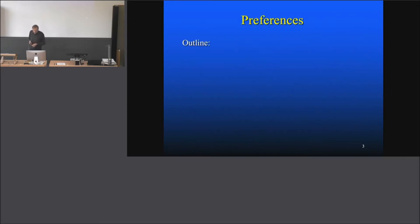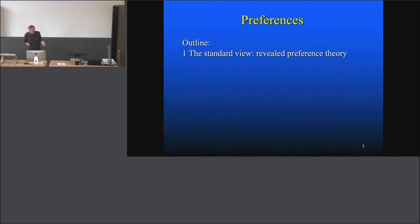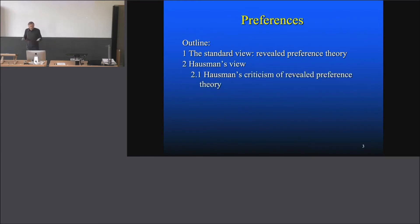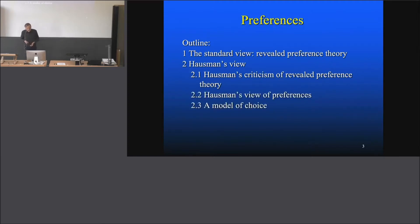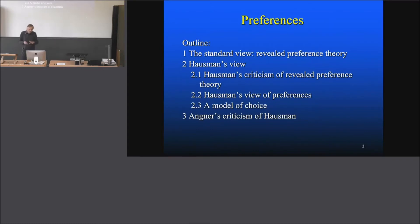I had suggested you read at least one of these articles. This is the outline: the standard view you are probably familiar with from your undergraduate classes — Microeconomics 101 — is revealed preference theory. Then I will contrast that with Haussmann's criticism of revealed preference theory, then Haussmann's view of preferences, then a model of choice, and finally Agner's criticism of Haussmann. The discussion is completely open — there is no consensus in philosophy of economics on this matter.